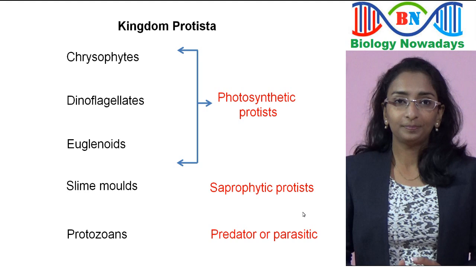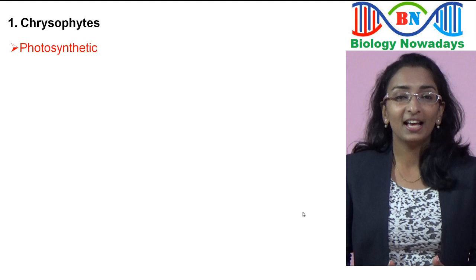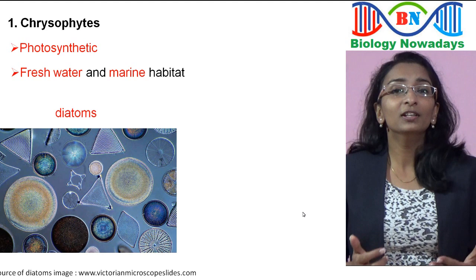Let's see the first group under Protista — the chrysophytes. They are photosynthetic. We can find them in freshwater as well as in marine environments. Chrysophytes include diatoms and golden algae, or desmids.